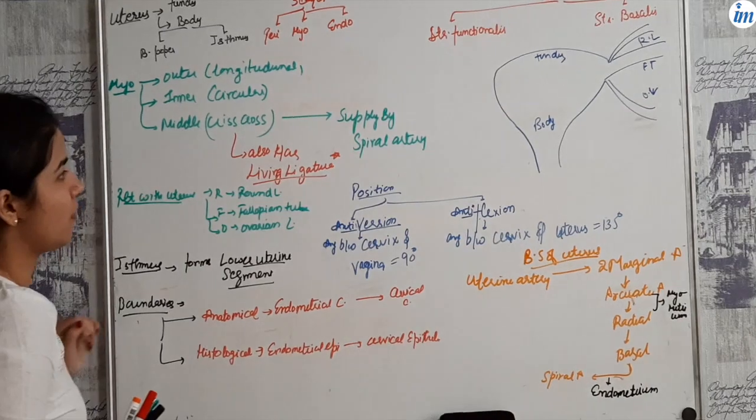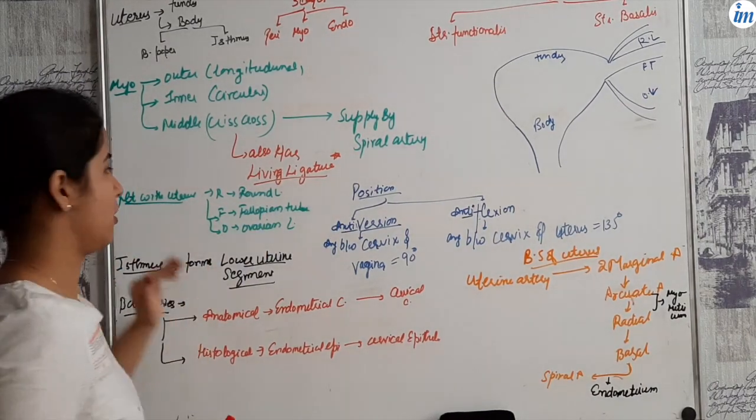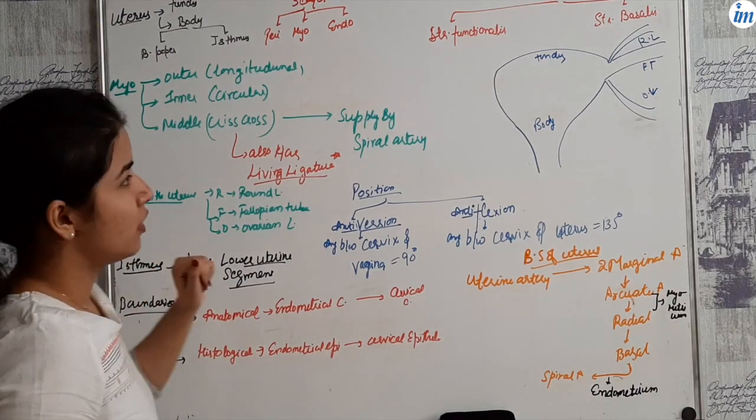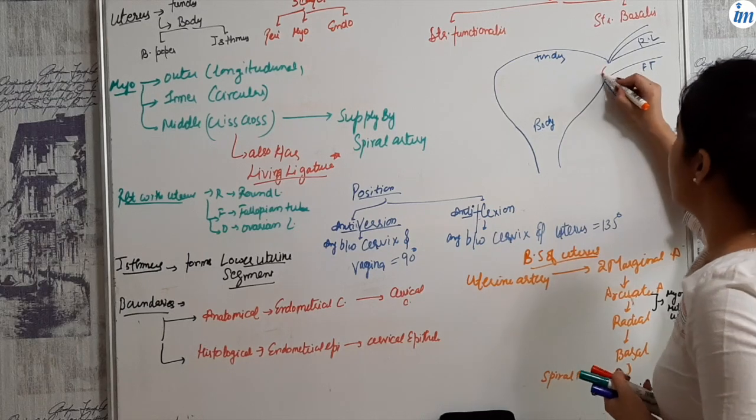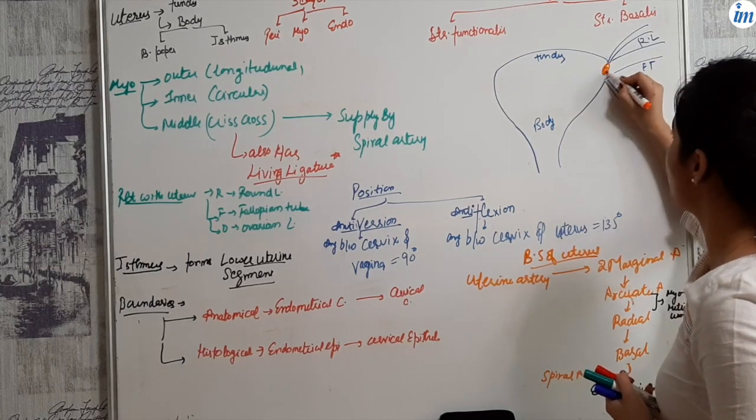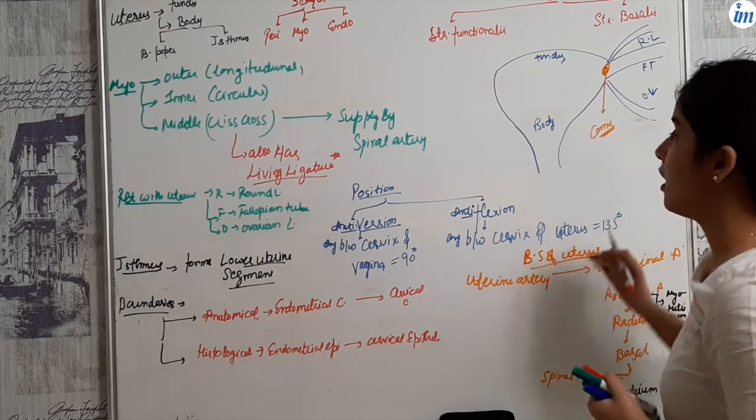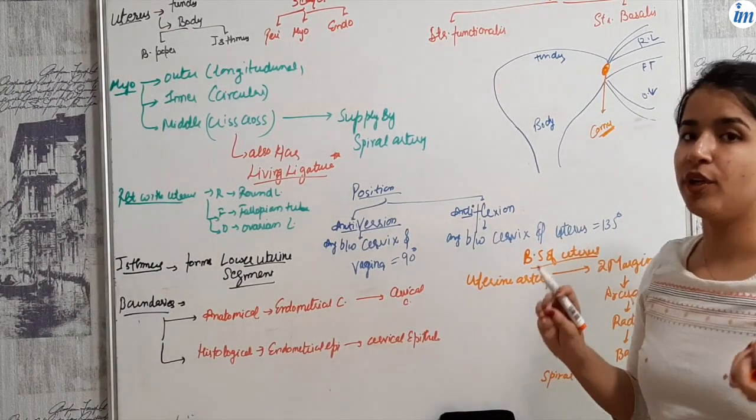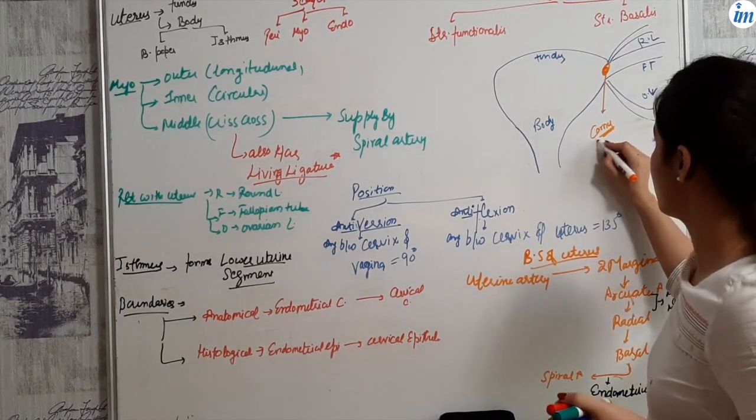There is one point I want to discuss. This area, this point is cornuo. Cornuo is nothing but a part of the fallopian tube which separates the fundus and the body of the uterus.